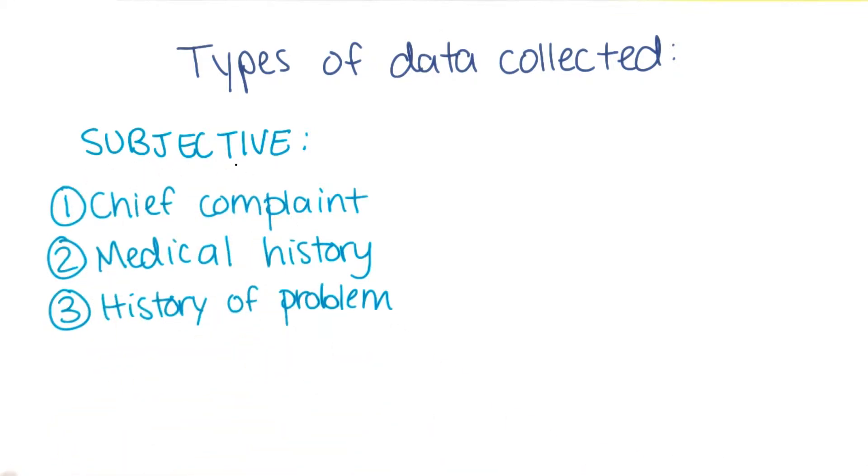The data physicians record can be divided into subjective information, generally information collected from the patient, such as the chief complaint, the reason they visited the physician today, their medical history, and the history of the particular problem that brought them to the doctor.